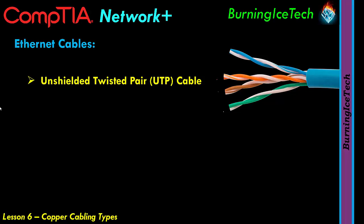Inside the UTP cable you'll find: blue, blue-white, orange, orange-white, brown, brown-white, green, and green-white. So it's four pairs of wires — eight wires in total — and these wires are what's used for communication to occur between two different devices.